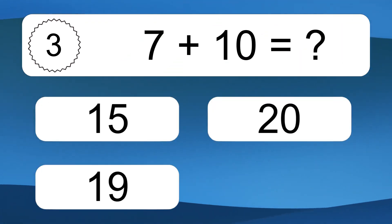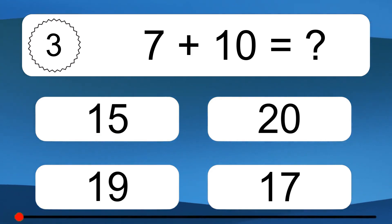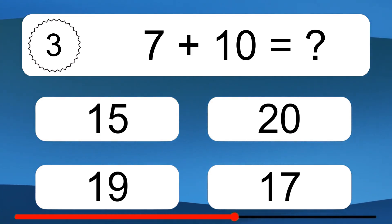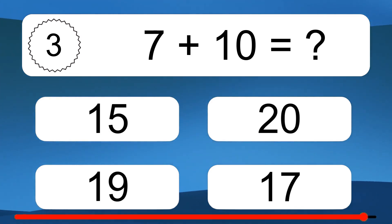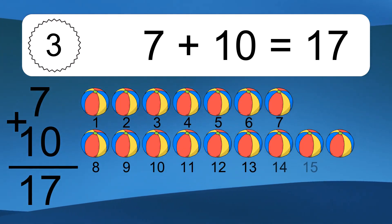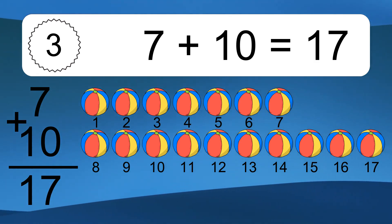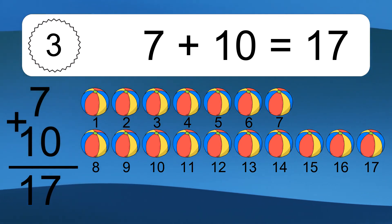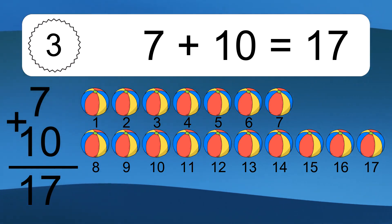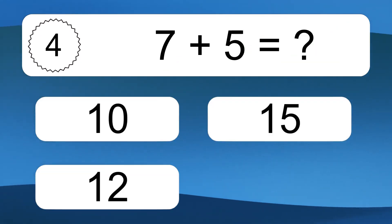7 plus 10 equals what? 7 plus 10 equals 17. Let's count it. 1, 2, 3, 4, 5, 6, 7, 8, 9, 10, 11, 12, 13, 14, 15, 16, 17.